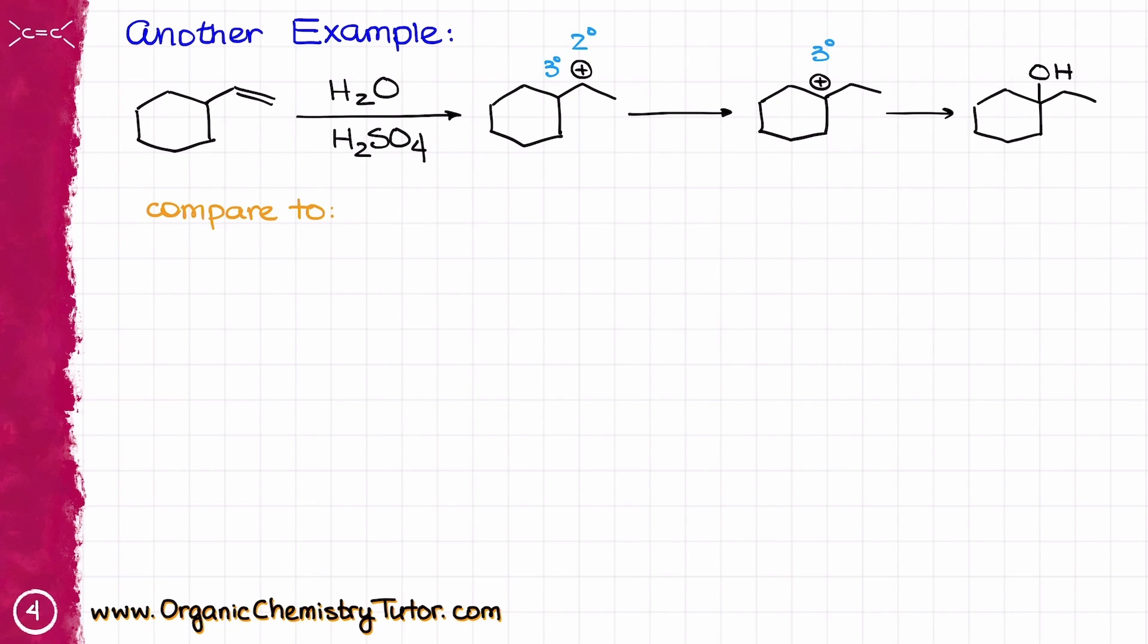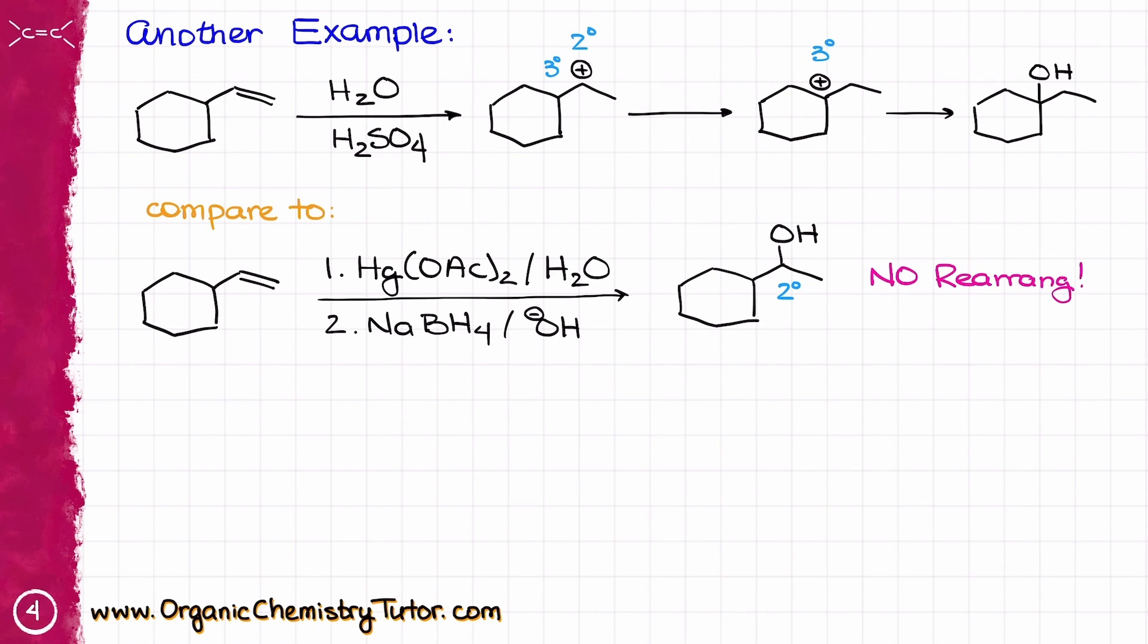Now, let's compare the reaction above with a similar reaction where I have the same starting material, but instead of a simple hydration, I am going to do the oxymercuration reaction. Well, in this case, if I follow through all of my mechanistic steps, the product that I am going to get will look like this, where my OH is at the secondary carbon. So, there is no rearrangement in this case because there is no carbocation intermediate.